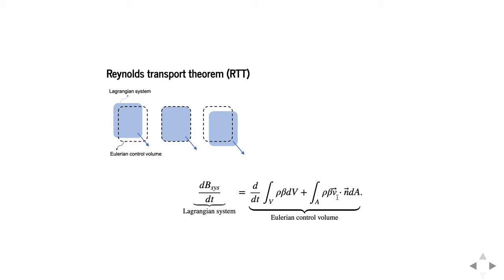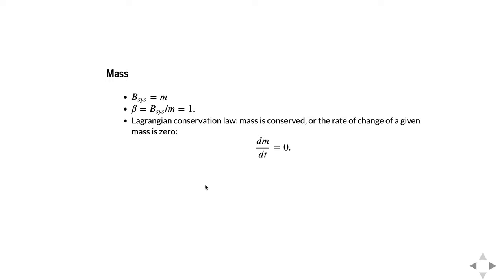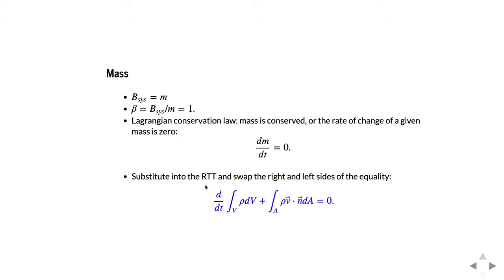Let's apply the Reynolds transport theorem to the mass balance. For mass, big B is mass, beta is B per unit mass which is just one, and the Lagrangian conservation law says that mass is conserved — the rate of change of a given mass is zero. Substituting into the Reynolds transport theorem and flipping left and right sides, we get the mass conservation equation, also called the continuity equation, written in integral form with integrals over volume and surface area.